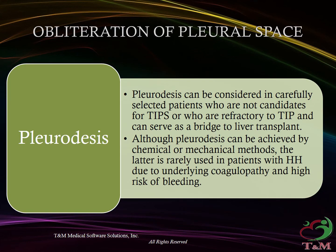Obliteration of the pleural cavity: Pleurodesis can be considered in carefully selected patients who are not candidates for TIPS, or who are refractory to TIPS, and can serve as a bridge to liver transplant. Although pleurodesis can be achieved by chemical or mechanical methods, the latter is rarely used in patients with HH due to underlying coagulopathy and high risk of bleeding.